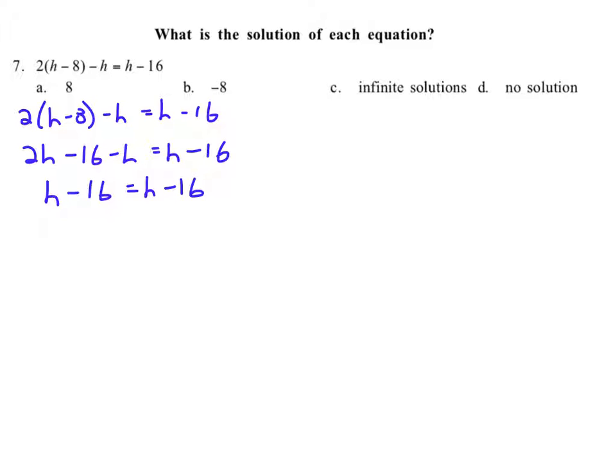Well, what we're looking at here is we've got the same coefficient on the variable. It's a 1. And then we've got the same thing happening to it. Minus 16 and minus 16. And therefore, this is an identity situation. Both sides are exactly the same. Infinite solutions.